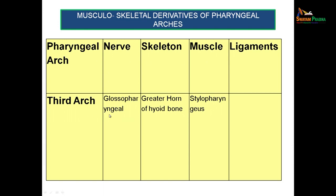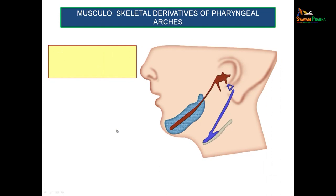There is no particular name given to the third arch. The nerve of the third arch is the glossopharyngeal nerve. The only muscle supplied by the glossopharyngeal nerve — and thus derived from the third arch — is stylopharyngeus. The skeletal component is the greater horn of the hyoid bone; the lesser horn was developing from the second arch. The greater horn and lower portion of the body of the hyoid bone are derived from the third arch.